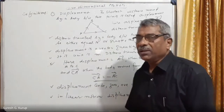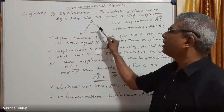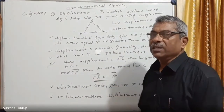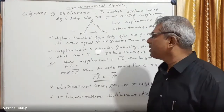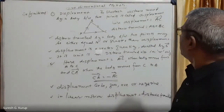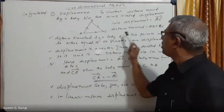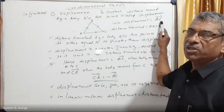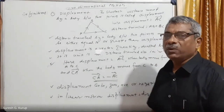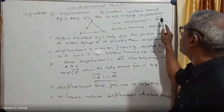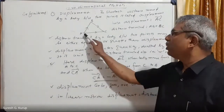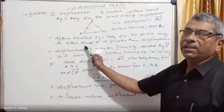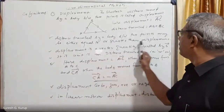The total distance traveled by the body is AB plus BC, but displacement is equal to AC, because displacement is the shortest distance between two points. Displacement is a vector quantity, denoted by vector S, because the body travels from A to C.